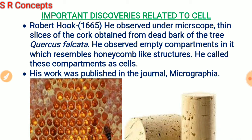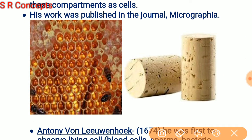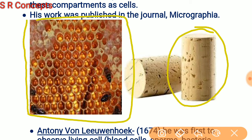Looking at this image, Robert Hooke took bottle corks obtained from the dead bark of a tree — the common name was Spanish oak tree and the botanical name was Quercus falcata. He made thin slices and observed them under a microscope. The structures visible under the microscope resembled a honeycomb, with hexagonal compartments. He gave the term 'cell' to these compartments.